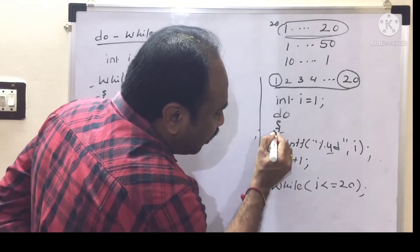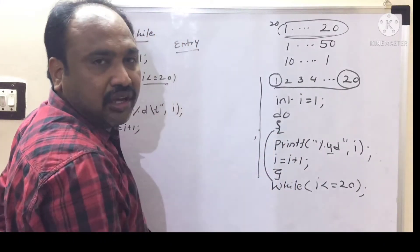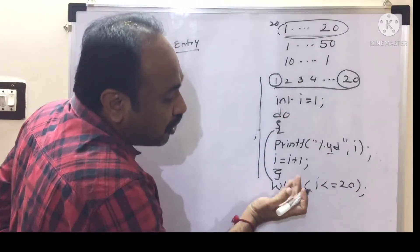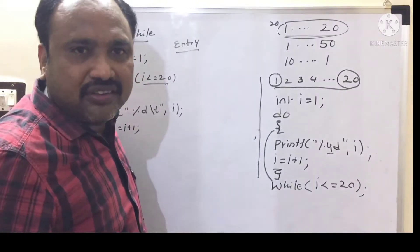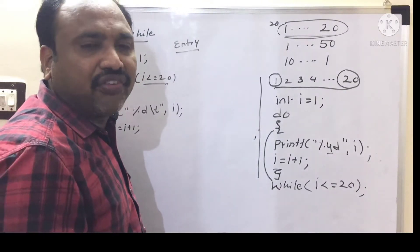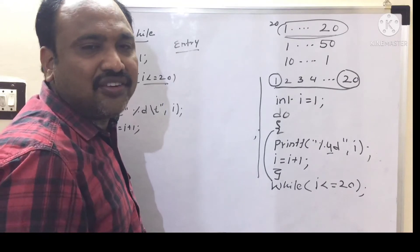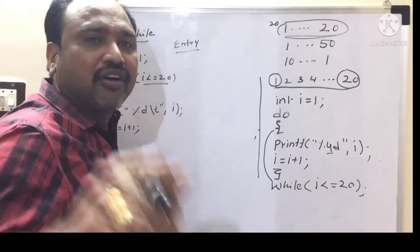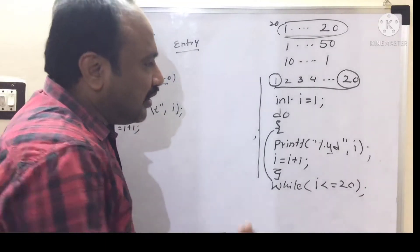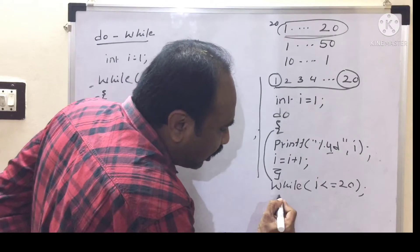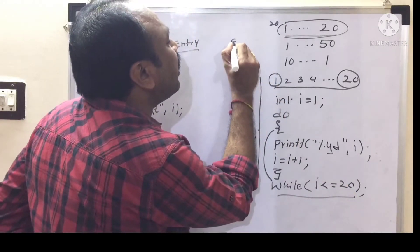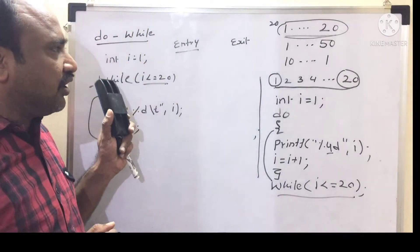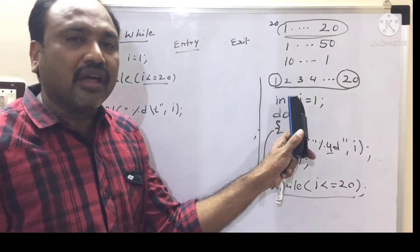When we come to do-while, first we enter the block of statements without checking any condition. After executing the block, when we are going out — exiting — we check the condition. Hence do-while is referred to as an exit control statement. So the first difference is: while is entry control, do-while is exit control.